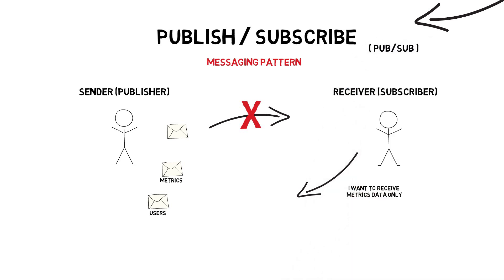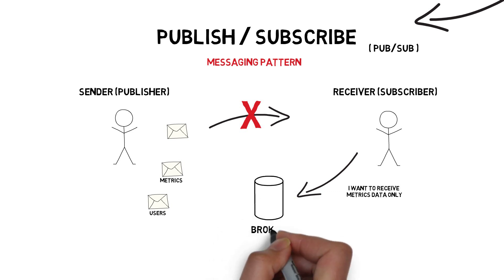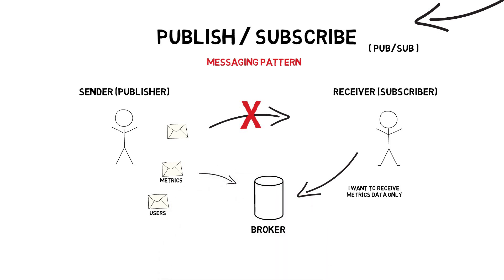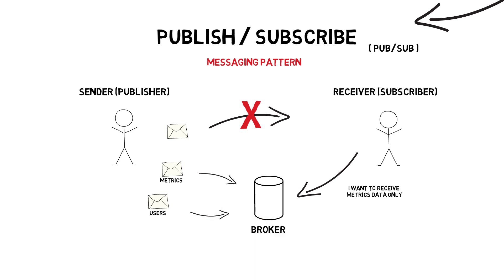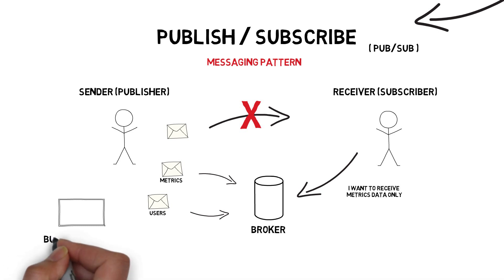Pub-sub systems usually have a broker where all messages are published. This decouples publishers from subscribers and allows for greater flexibility in the type of data that subscribers want to receive. It also reduces the number of potential connections between publishers and subscribers. A bulletin board is a good analogy to a pub-sub messaging pattern, where people can publish information in a central place without knowing who the recipients are.